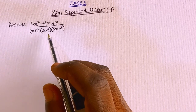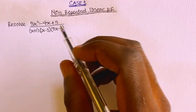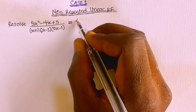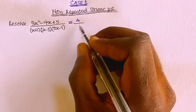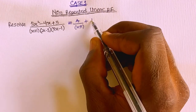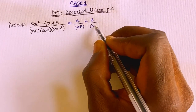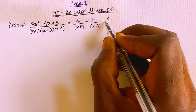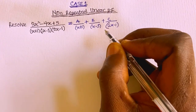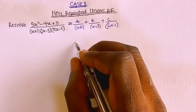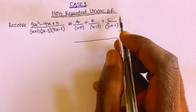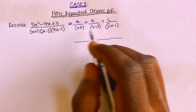So in this case, we are going to resolve this into partial fractions. This whole fraction is going to be equivalent to A over (x+1), plus B over (x−3), plus C over (2x−1). After that, we find the LCM and multiply both sides by all these factors.